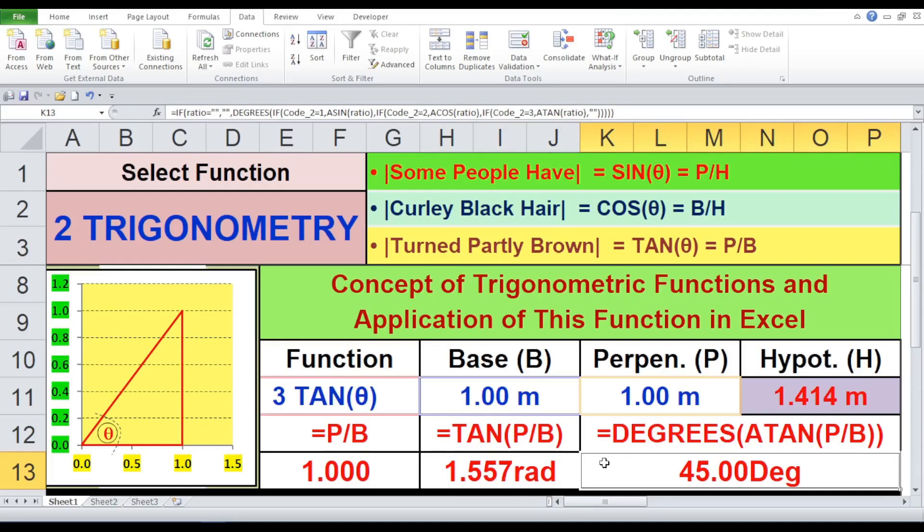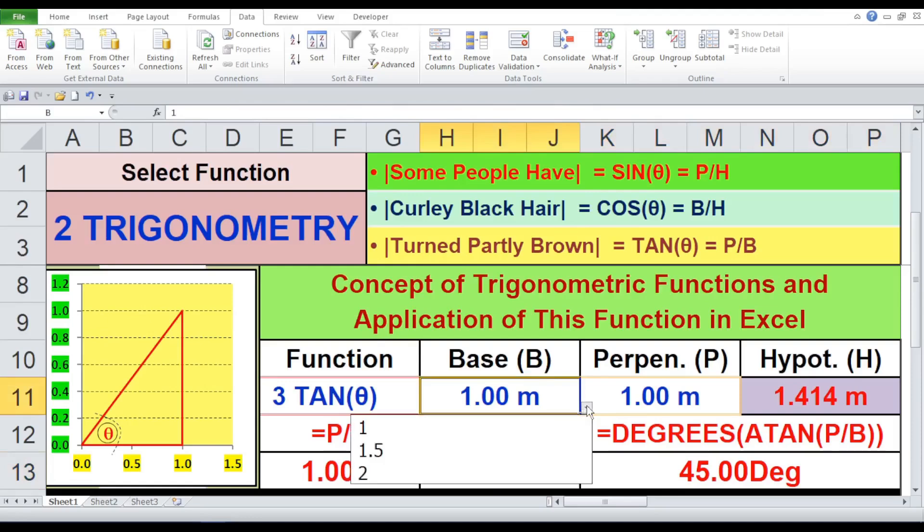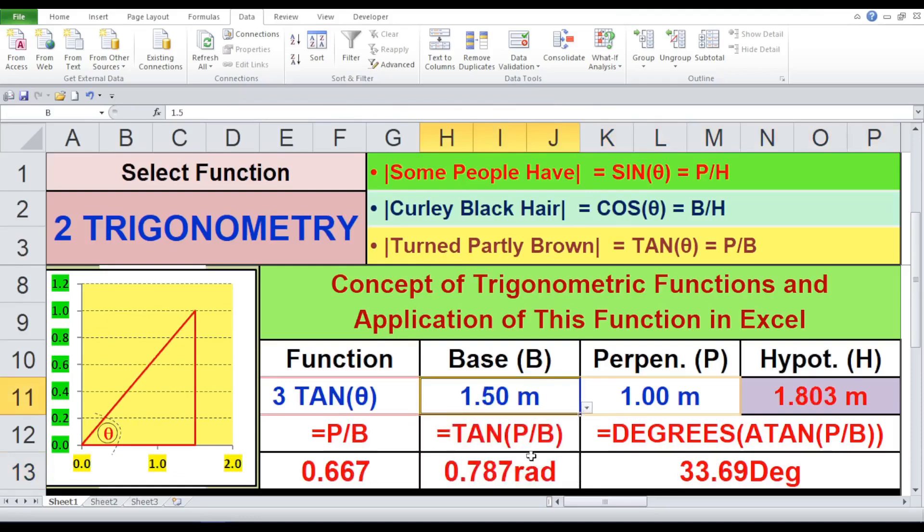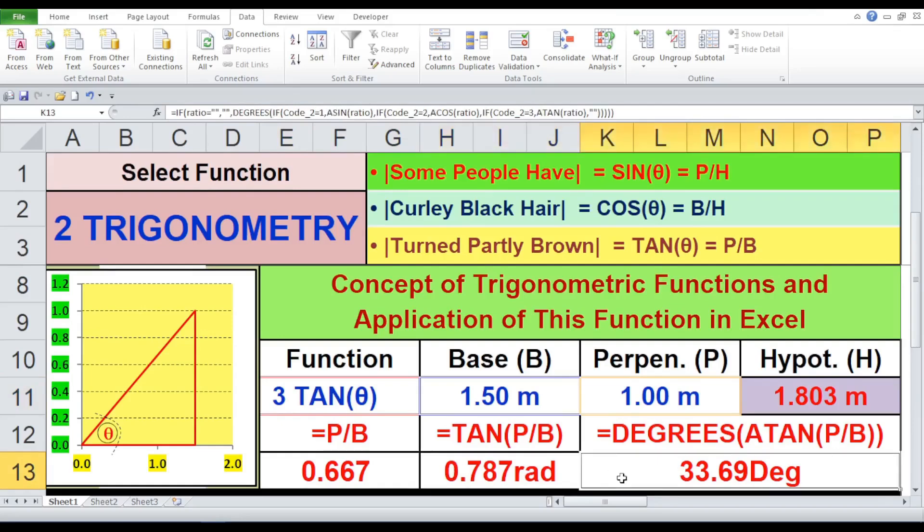Trial 2A, function tan. Now I am changing the value of base from 1 meter to 1.5 meters. Perpendicular P 1 meter, Hypotenuse H equals 1.803 meters. P by B equals 0.667. Tan P by B equals 0.787 radians. Base angle theta equals 33.69 degrees.